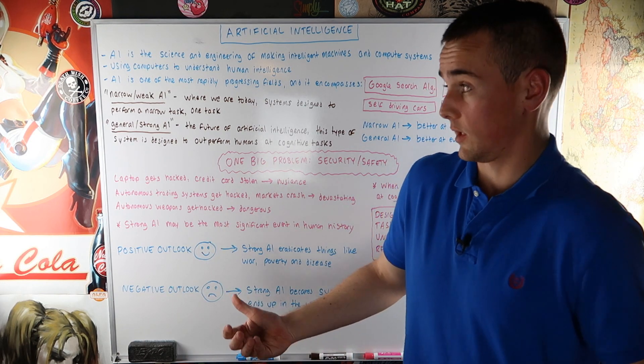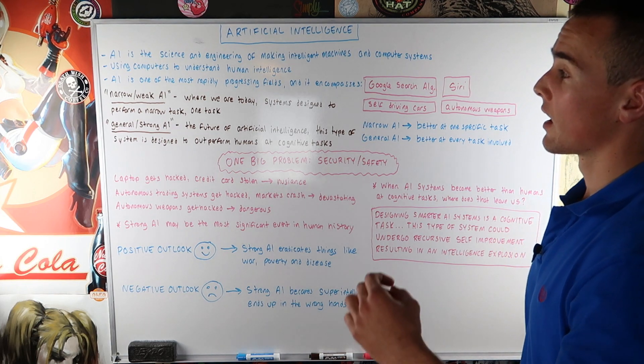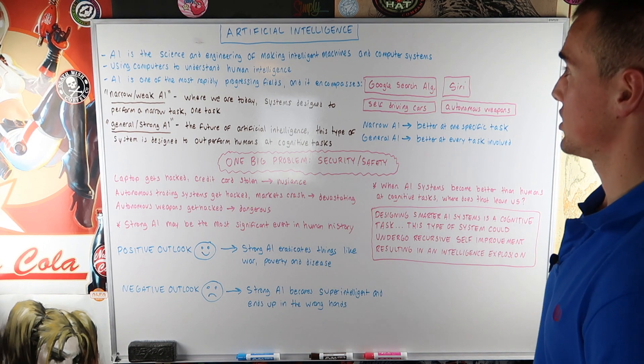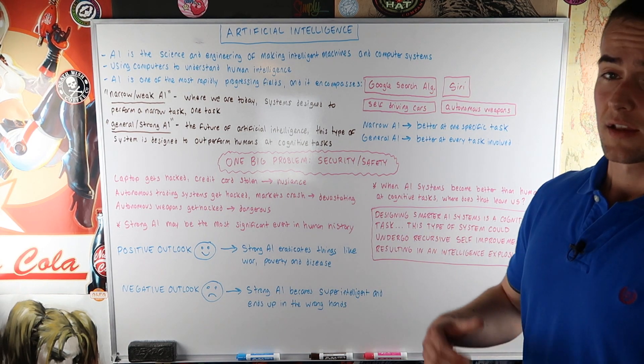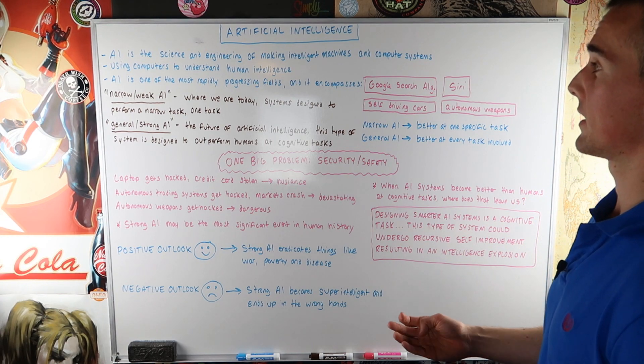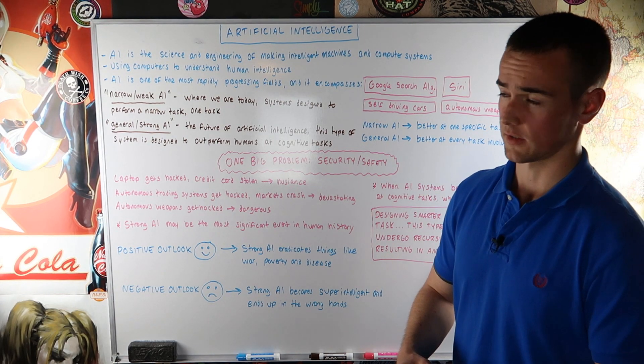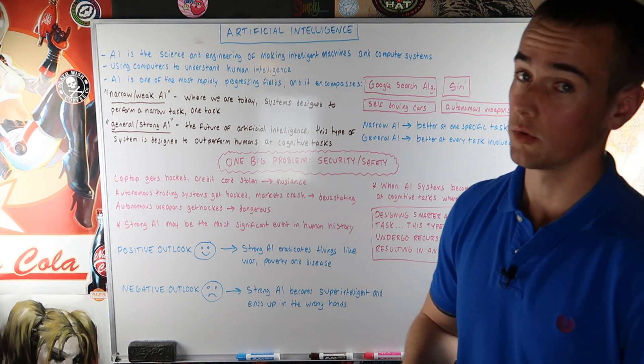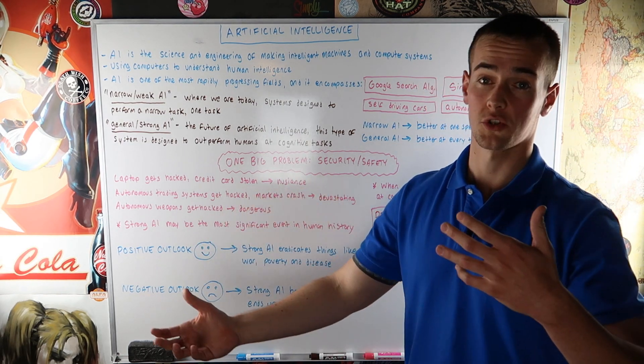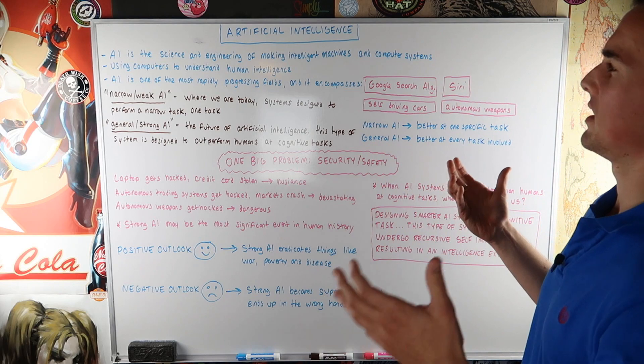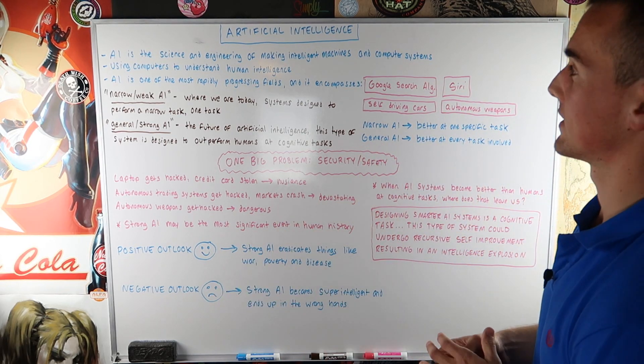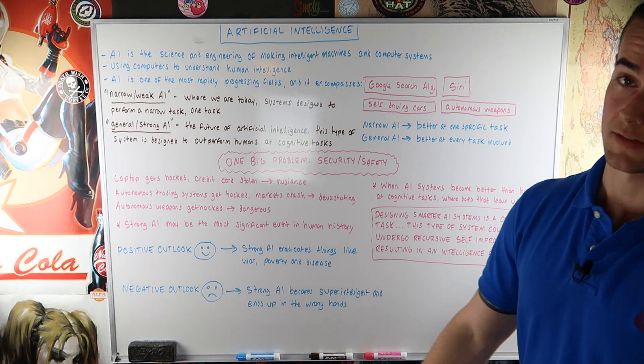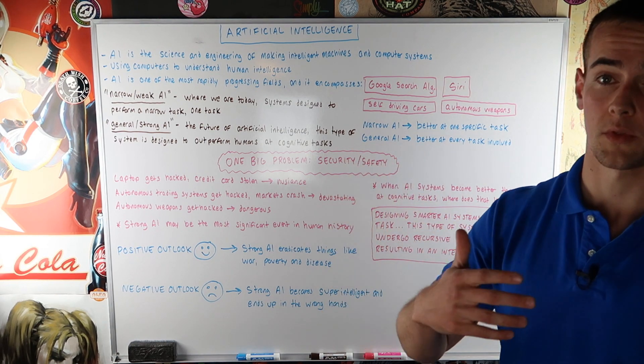So basically artificial intelligence is the science and engineering of making intelligent machines and computer systems. Simply put, it is using computers to understand human intelligence. And artificial intelligence is one of the most rapidly progressing fields and it encompasses things that we already use today. So whether or not you know this, you're already using AI systems. For example, the Google search algorithm is an AI system. Siri is an AI system.